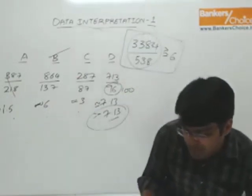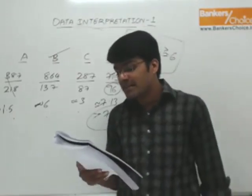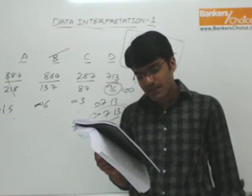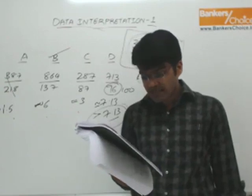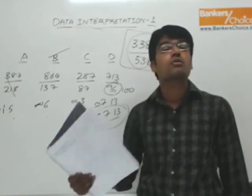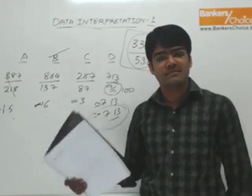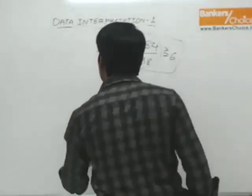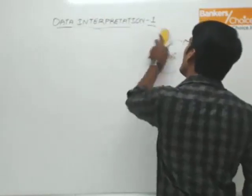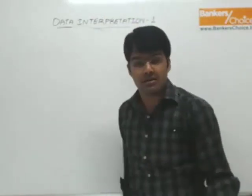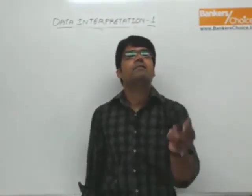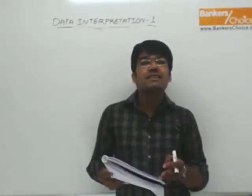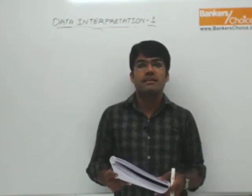Question number three: the number which is 5 times the excess of total number of books issued to C class members over the total number of books issued to A class members is mostly the number denoting the total number of what. These questions are only difficult to understand — once you understand the question, answering is not difficult. Question number three is actually one of the easiest.